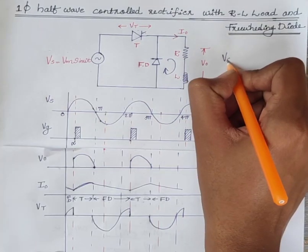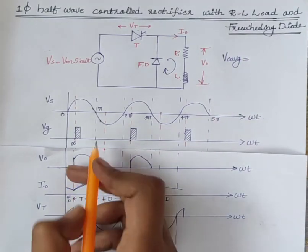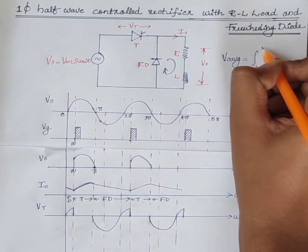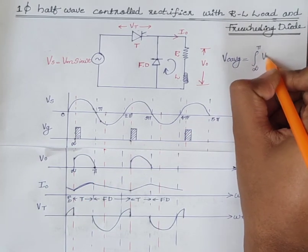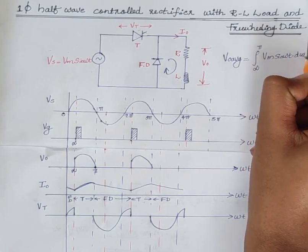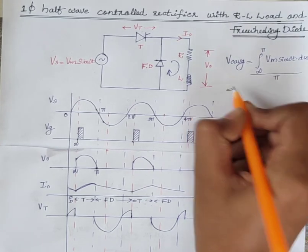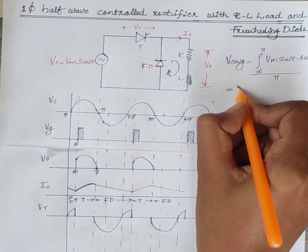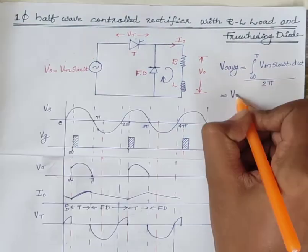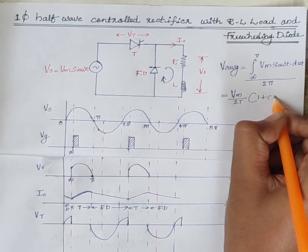The average value of output voltage, V0_average, is equal to the integral from alpha to pi of Vm sin(omega t) d(omega t), divided by 2pi, which equals Vm divided by 2pi into (1 plus cos alpha).